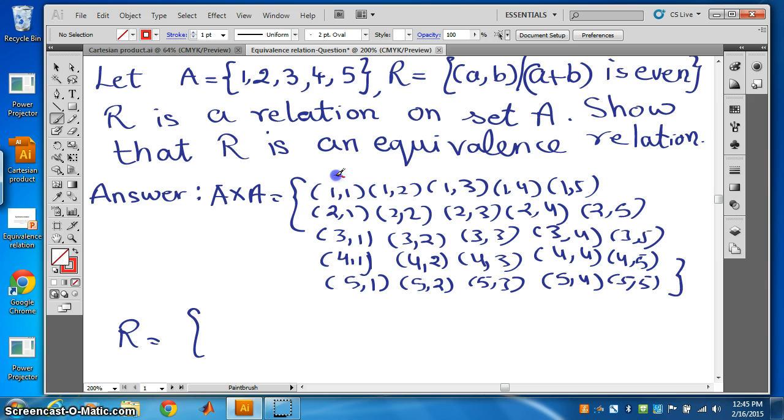Now can we say (1,1), a plus b is even? Check. Yes, we can take (1,1). 1 plus 1 is 2, it is even. What about (1,2)? 1 plus 2 is odd, so we cannot take this. (1,3) is even. Similarly (1,4) will not come. (1,5) is even. (2,1) is odd. (2,2) is even, so (2,2). Next (2,4).